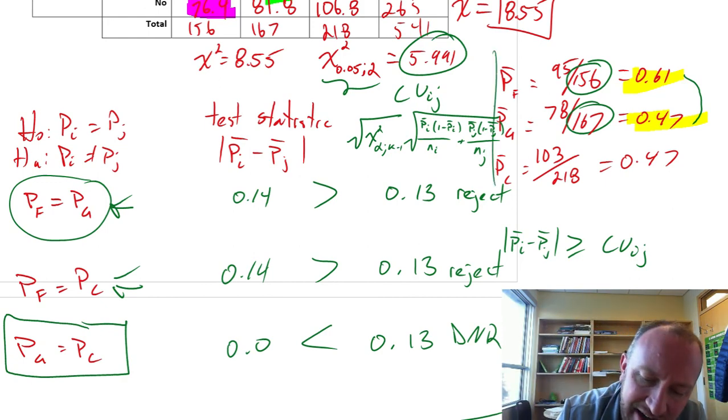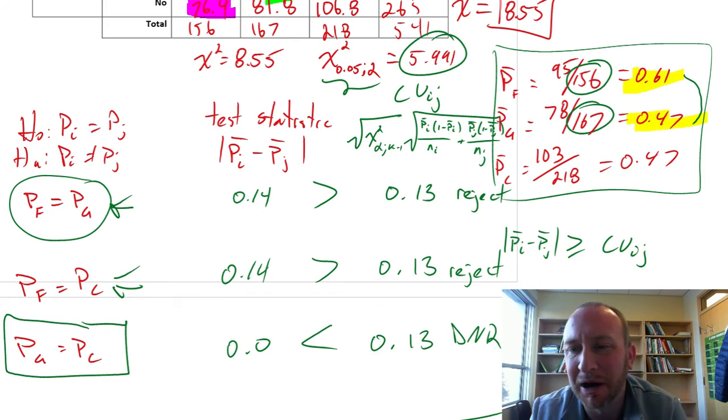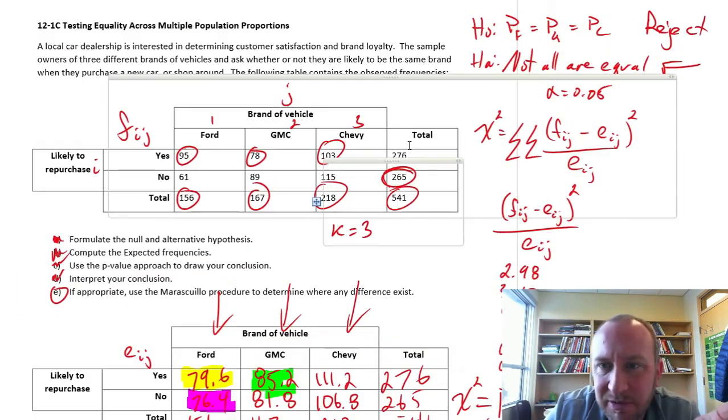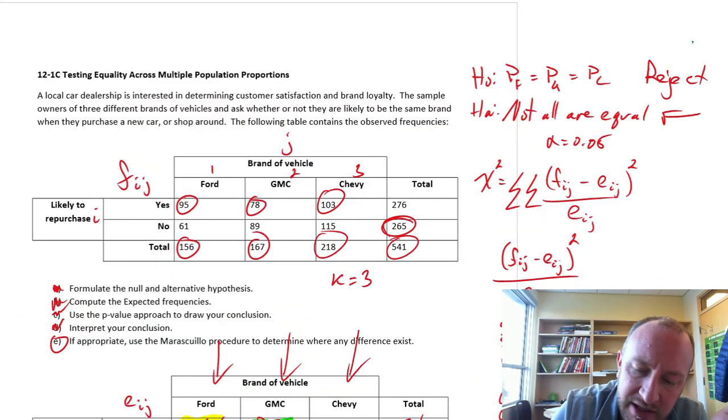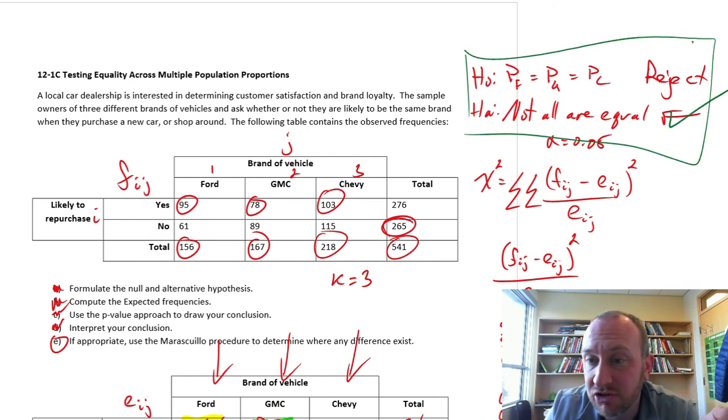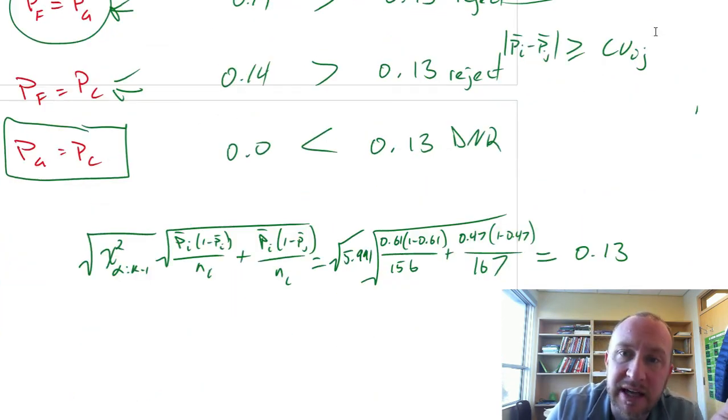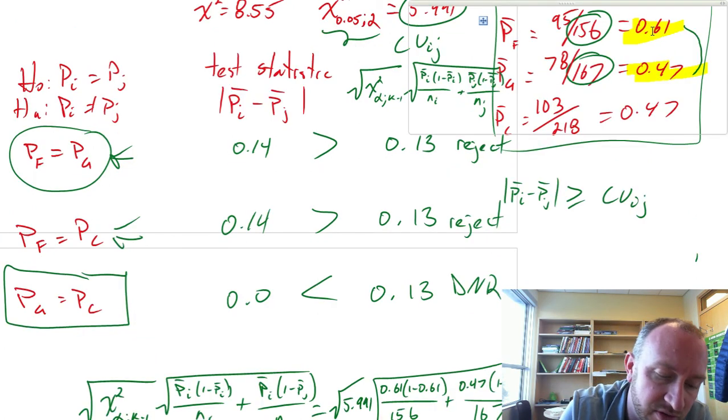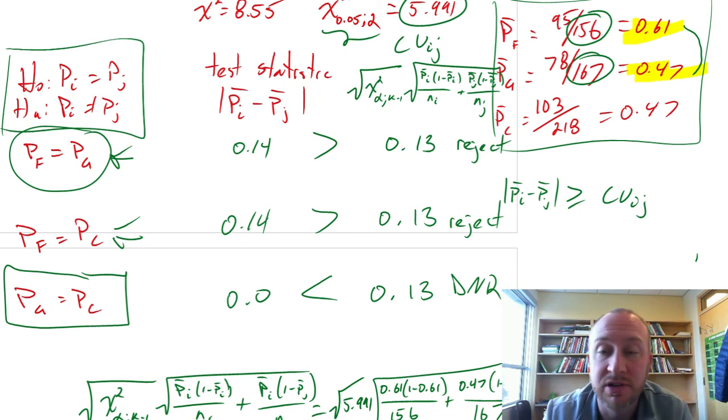And again, looking at our sample values, that's probably what we expected to find anyway. So no surprises there. Okay, so that's the extent of it. It's a tedious procedure. The first part here, we identify while we formulate our test. We identify that we have evidence to show that there's a difference in those proportions. So then what do we do? We calculate all these critical values and these test statistics to go through a series of two sample tests to identify then where does that difference exist.